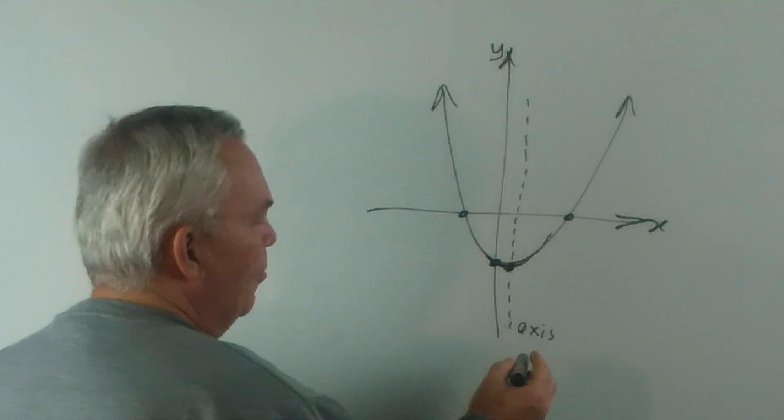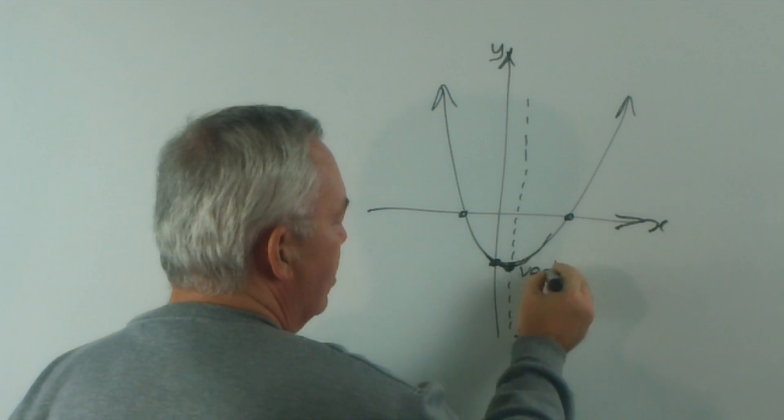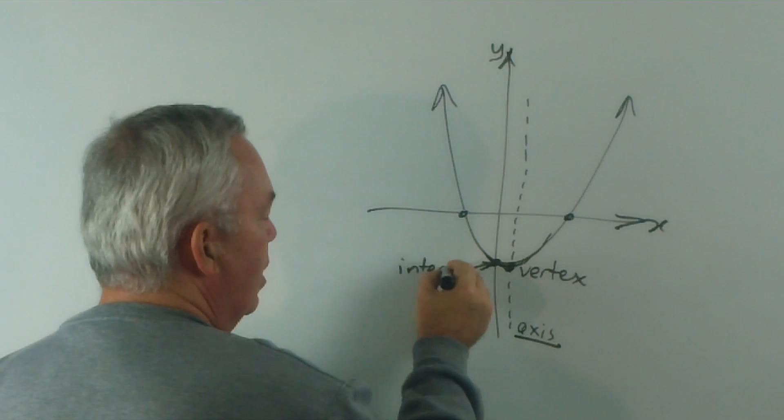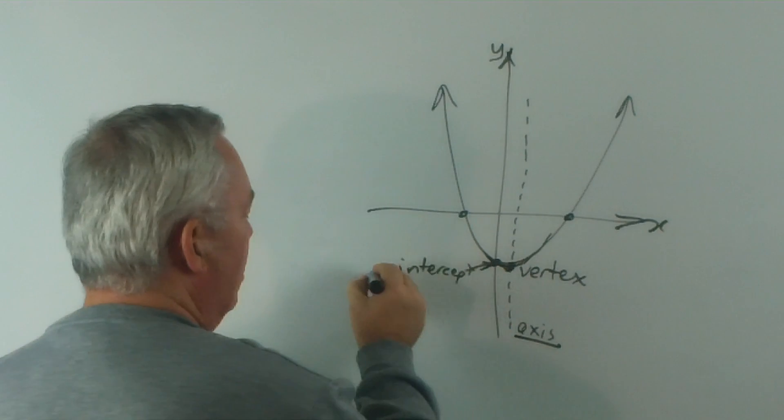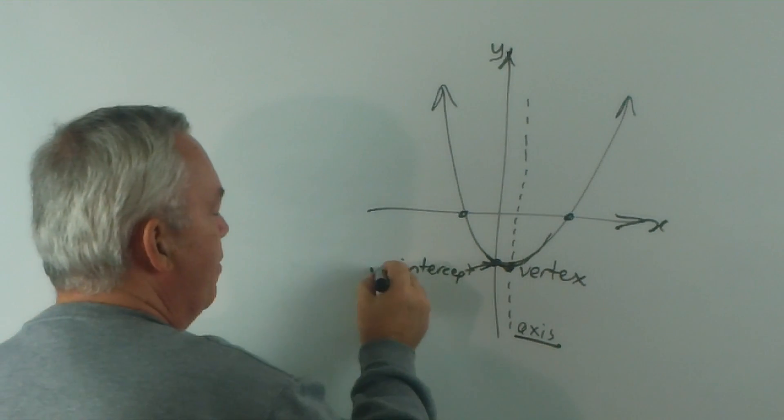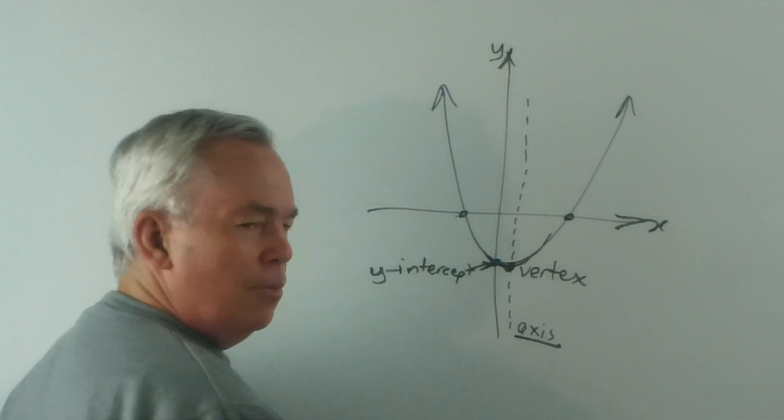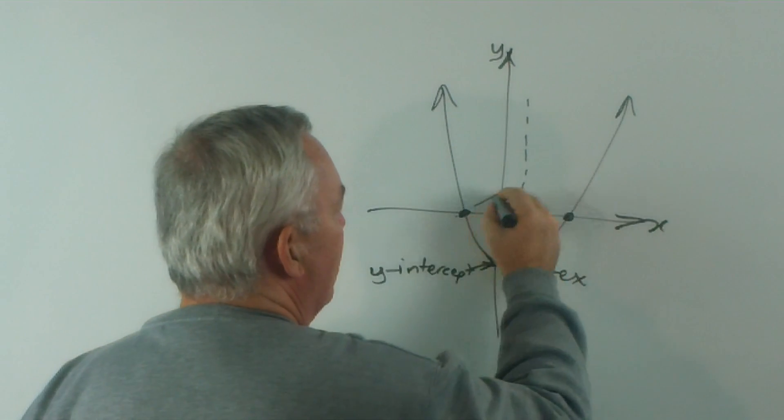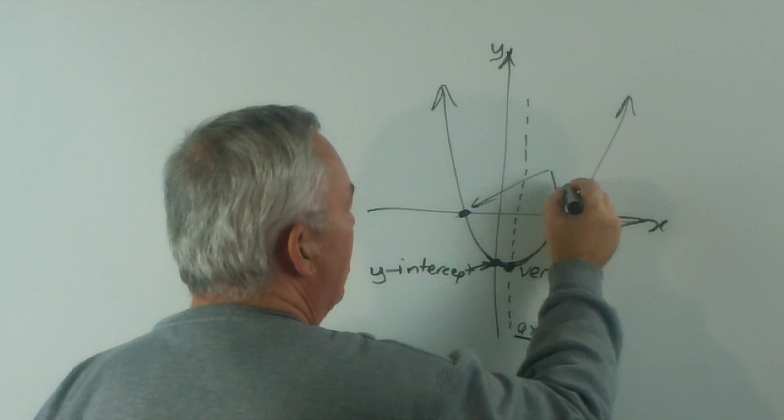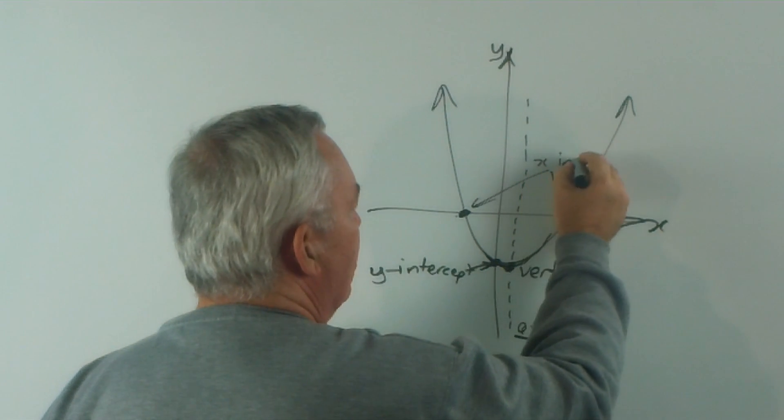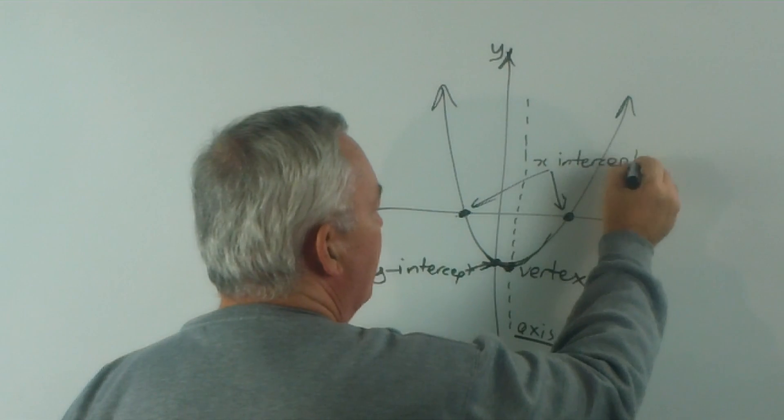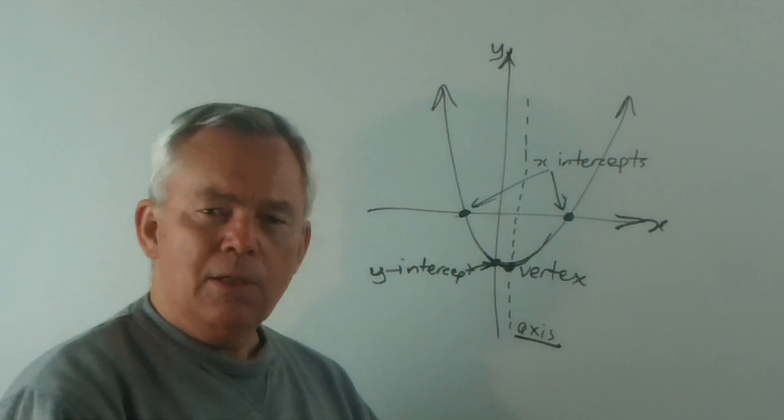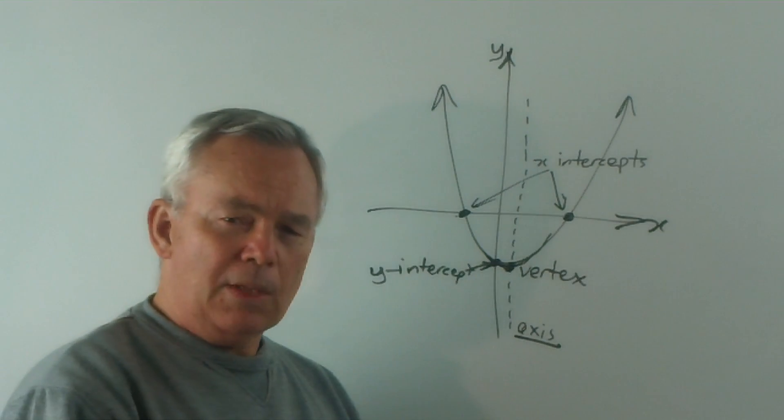Now these are four different things: the axis, the vertex, the y-intercept, and the x-intercepts, which are often known as the roots or zeros of the quadratic equation. These four things we need to develop skills to find.